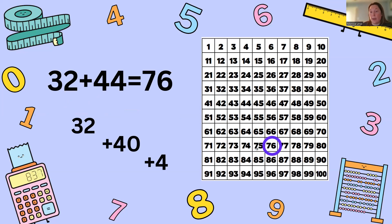If you didn't get 76 go back and check. Did you move down four rows, did you start at 32, did you move to the right four?